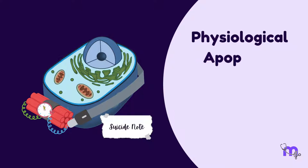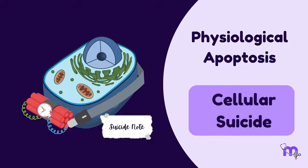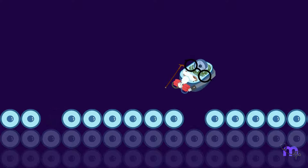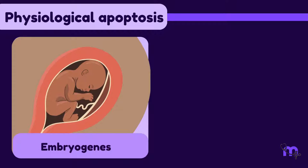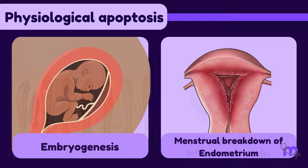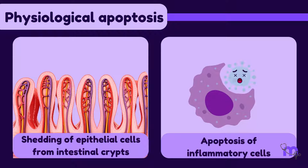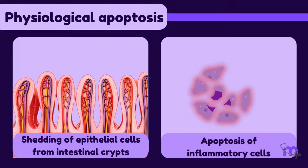Physiological apoptosis is also known as cellular suicide. It is a means by which the body eliminates cells that are either aged or no more needed. Examples include during embryogenesis, menstrual breakdown of endometrium, shedding of epithelial cells from intestinal crypts, or apoptosis of inflammatory cells after the organism is eliminated.